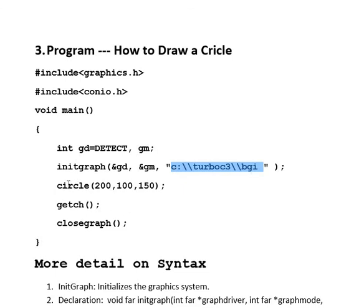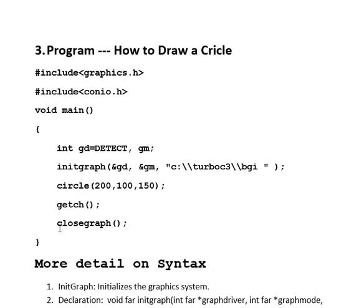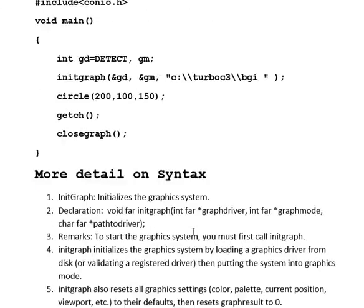Now the circle function: circle contains 200, 100, 150 — that is x, y, and radius. getch is used to control the program, and closegraph will close the graph.